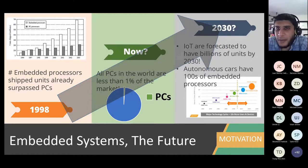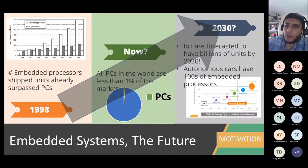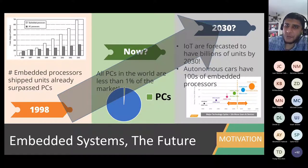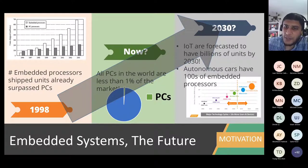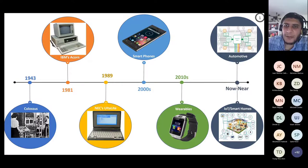Looking into the future, this trend is going to increase thanks to the IoT revolution, which is forecasted to have billions of units by 2030. Autonomous cars will have more than 100 embedded processors, and even current 2020 cars already have more than 100. With all the intelligence going on around us, embedded systems are supposed to be the future of computing systems.